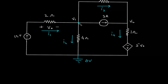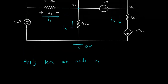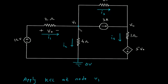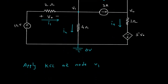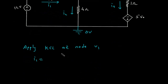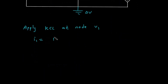Now we will apply KCL at node V1. The current entering this node is I1 only; all other currents are leaving. So I1 is equal to the leaving currents: I2 plus 3 plus I3.